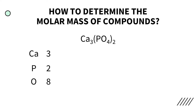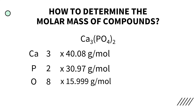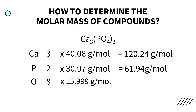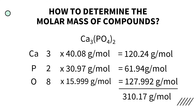Afterwards, we multiply them by their respective molar masses. Calcium has a molar mass of 40.08 grams per mole, phosphorus has 30.97 grams per mole, and oxygen has 15.999 grams per mole. So for calcium we arrive at 120.24 grams per mole, for phosphorus 61.94 grams per mole, and for oxygen 127.992 grams per mole. Adding them all up, the molar mass of calcium phosphate is 310.17 grams per mole.